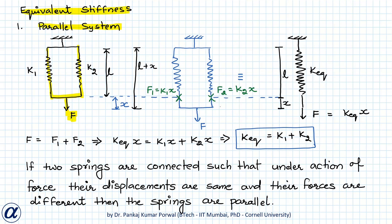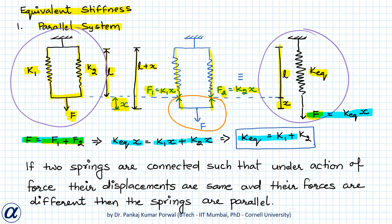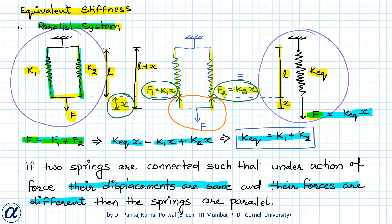For this parallel system, k equivalent equals k1 plus k2. Note that what makes these springs in parallel is not their parallel placement, but the property that their displacements are the same and their forces are different. Both springs undergo the same displacement x, while their forces f1 and f2 are different.